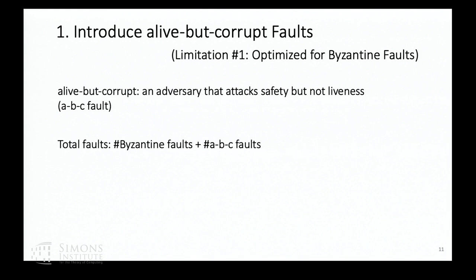With Flexible BFT, which we think is one consensus protocol for the populace, we try to address these concerns. First, we introduce the notion of the alive but corrupt fault — an adversary that tries to attack your safety but not your liveness. One can think of it as a rational adversary whose utility function is maximized by creating a safety violation. We refer to this as an ABC fault. The total number of faults is Byzantine faults plus ABC faults, and in that sense we say we can tolerate a larger number of faults.